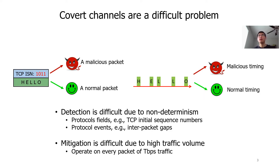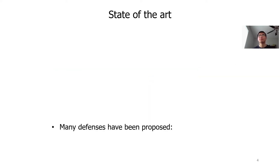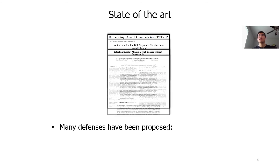Second, after detecting suspicious flows, the mitigation of covert channels requires operating on every packet. In today's data center, the traffic volume is at a terabits per second level, so it requires pretty efficient per-packet processing.